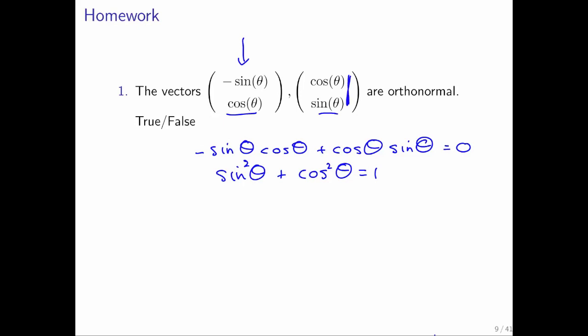Similarly, if we take this vector and take the dot product with itself, we get cosine squared theta plus sine squared theta. And we know that that's equal to 1 as well. So these vectors are mutually orthonormal.